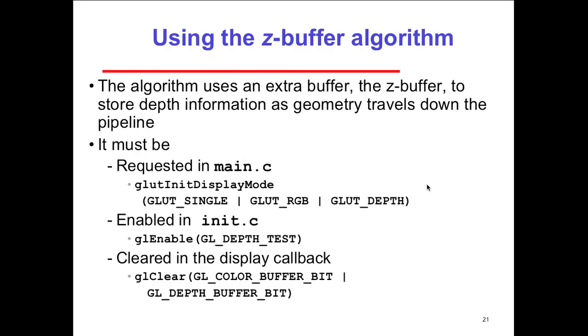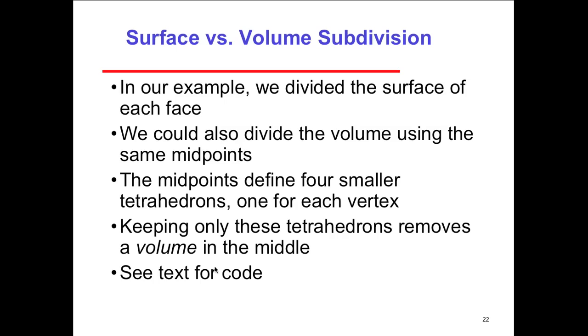So it's called a z-buffer algorithm. In terms of using the z-buffer algorithm, we don't actually have to write it, we just call a function. We say, apply hidden surface removal. The algorithm uses an extra buffer, the z-buffer, to store depth information. This is as the geometry travels down the pipeline, as we've seen from the pipeline example. It will store the information, calculate what's going to be shown, and get rid of everything else, which makes it more efficient. So we must be requested in main. So we run it, init display mode, and then GLUT depth, RGB, single. Enabled and init, the depth test. And cleared by the callback, the buffer bit. So clear back, or excuse me, clear off the buffer information. So the z-buffer is nothing more than the z-plane rendered and then removed, cleared out of the buffer. And then we don't have to worry about it. Basically, we're just not processing it.